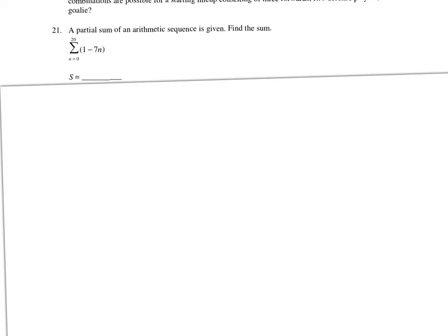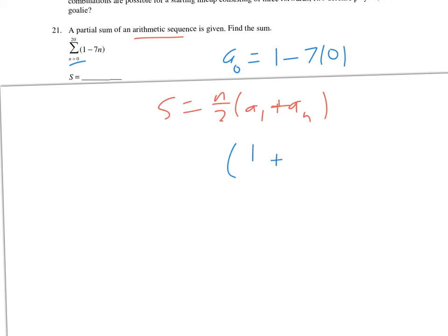Next, find the sum. It's arithmetic since it's in mx plus b form. Use the sum formula: n over 2 times a sub 1 plus a sub n. Since the sum starts at k equals 0, a sub 1 is actually a sub 0, which is 1 minus 7 times 0, so 1. The last term is a sub 20. For n, since we're starting at 0, use top minus bottom plus 1: 20 minus 0 plus 1 equals 21, not 20. There's one extra number since we start at 0.